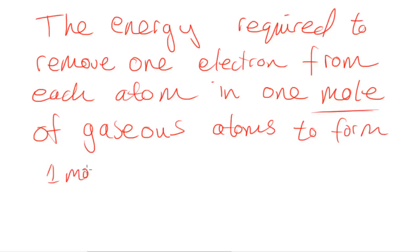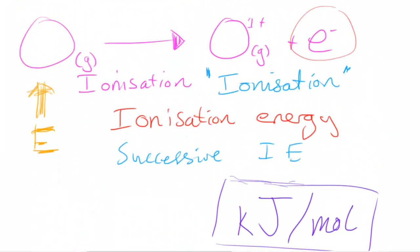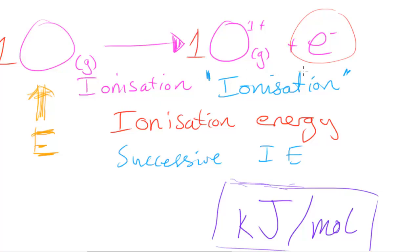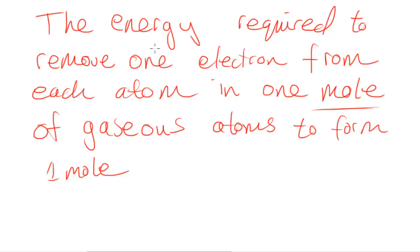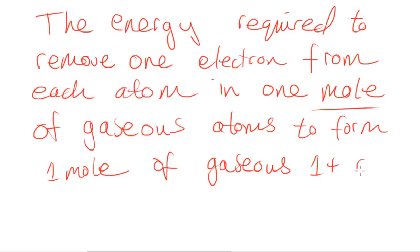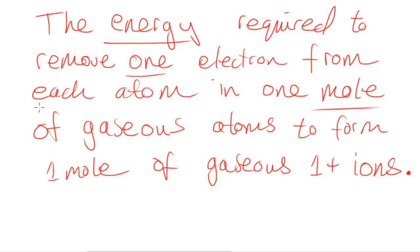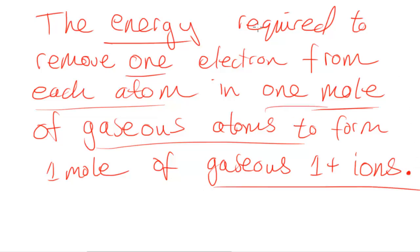Continuing the definition: to form one mole of gaseous one-plus ions. As you can see in the equation, the molar ratio is one mole of oxygen forming one mole of oxygen ions. We need to specify 'ions' and not 'atoms' since they now carry a charge — gaseous one-plus ions. So the full definition specifies: the energy required, one electron, from each atom, one mole of gaseous atoms, forming one mole of gaseous one-plus ions.